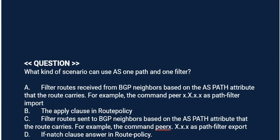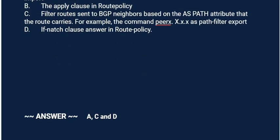Option B: The apply clause in a route policy. Option C: Filter routes sent to BGP neighbors based on the AS path attribute that the route carries. For example, the command: peer as-path-filter export. Option D: The if-match clause in a routing policy. Correct answer is Option A, Option C, and Option D.